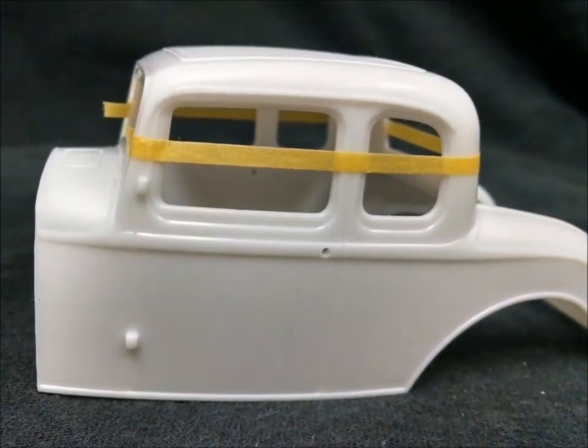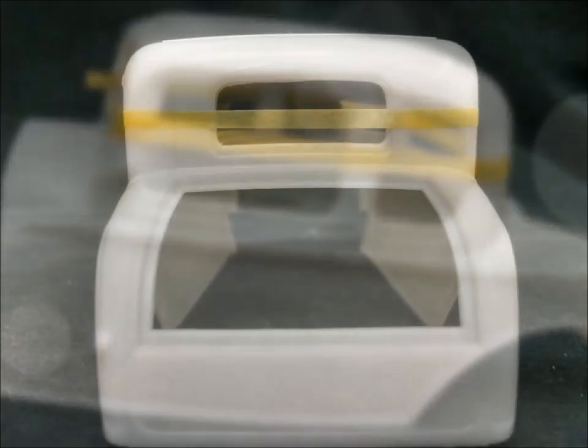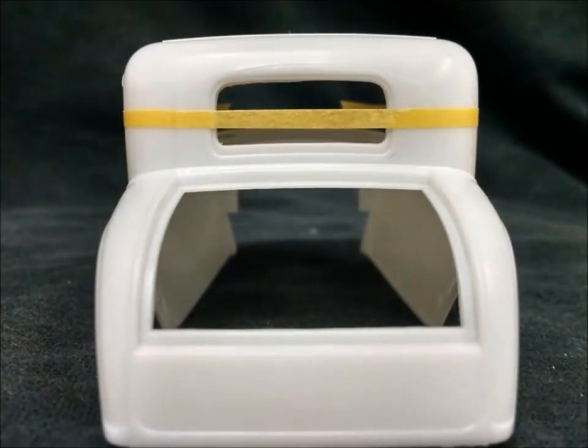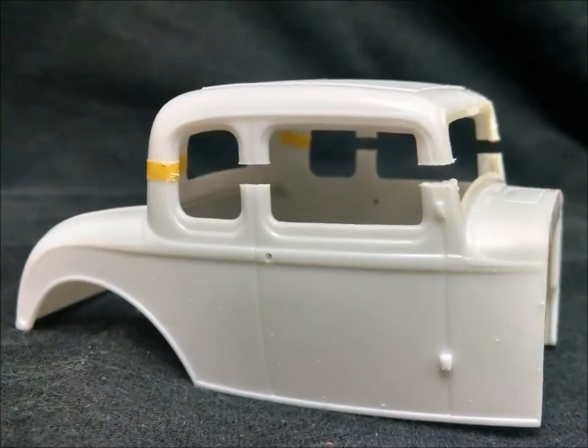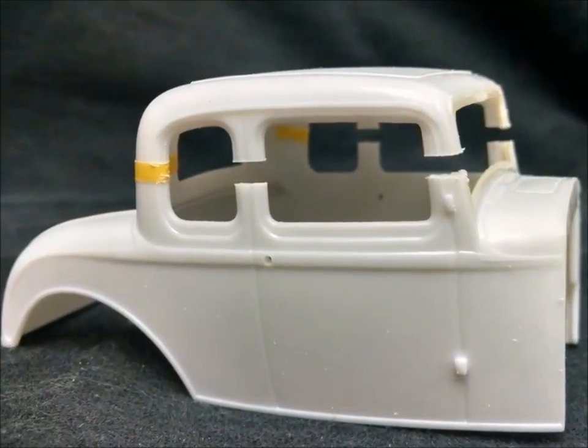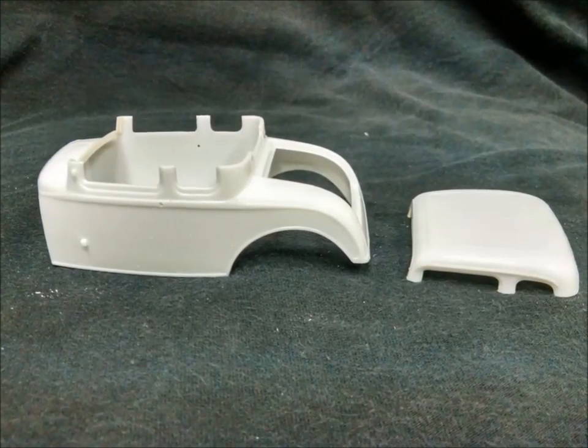Here I've laid out some Tamiya fine line masking tape around the upper body to serve as a cut line for when I chopped the top. Then some careful work with a razor saw, trying to keep the cut straight and parallel, resulted in removing the required three millimeters out of the model kit's roof.